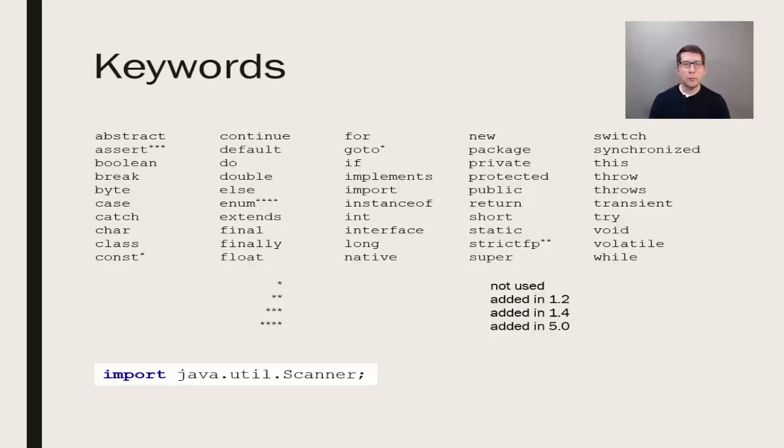One such word is import, which you can use to add special pre-written functionality to your code. An example would be to import the math library when we want to use math functions beyond basic arithmetic. Another is to bring in special tools such as the scanner, which allows us to read input from the keyboard or a file.